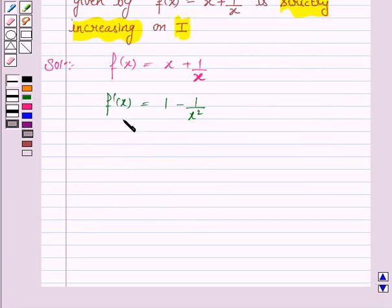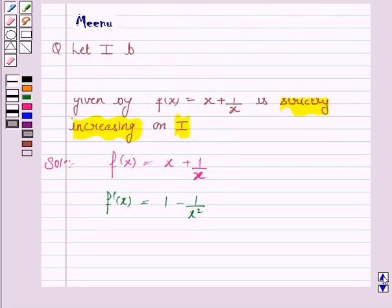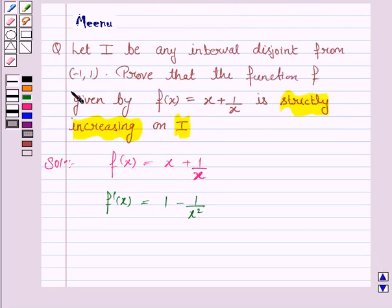Now, we have to show that f'(x) is greater than 0 in the interval I which is disjoint from (-1, 1).